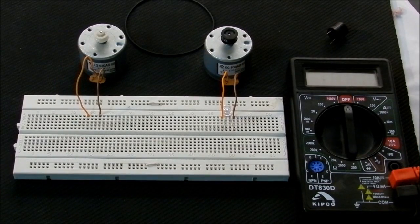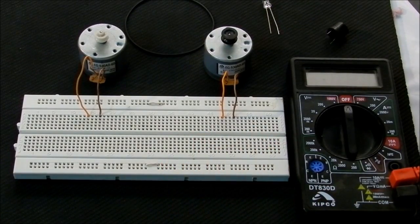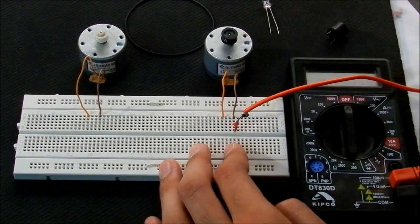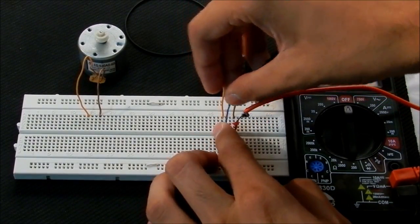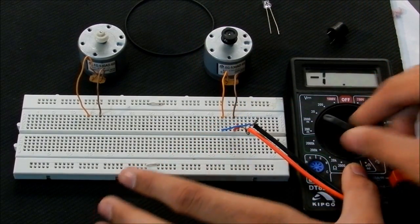Now let's demonstrate how this works. I'll just take out this LED, hook in the voltmeter, and set it to volts.